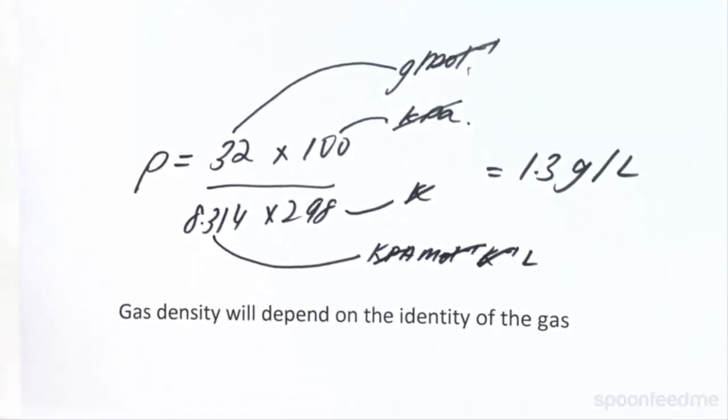So as well as this, this further shows us that the gas density will depend on the identity of the gas. That is the molar mass. So that's really kind of self-explanatory from what we've looked at. That brings us to the end of this video. Thank you.